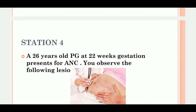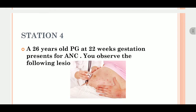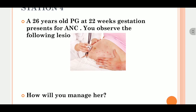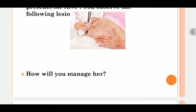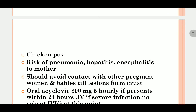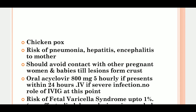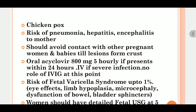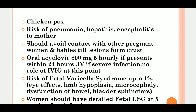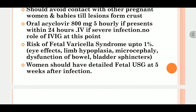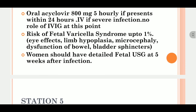Station four: a 26-year-old primigravida at 22 weeks gestation presents for antenatal care with lesions observed on her abdomen. This is chickenpox. Risks to the mother include pneumonia, hepatitis, and encephalitis, so she should avoid contact with other patients. Treat with oral acyclovir 800 mg five times a day for five days; use IV acyclovir if severe. No role for intravenous immunoglobulin. The risk of fetal varicella syndrome is up to 1%, including eye defects, limb hypoplasia, microcephaly, and dysfunction of bowel and bladder sphincter. A detailed ultrasound should be arranged.